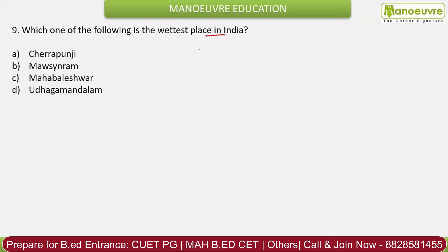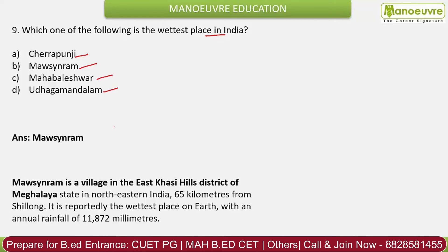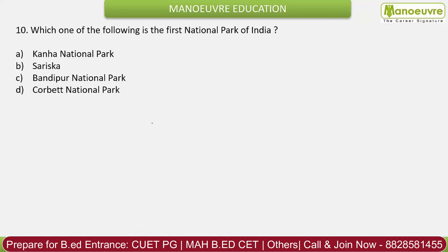Question 9: Which is the greatest rainfall place in India? Options: Cherrapunji, Mawsynram, Mahabaleshwar, Agumbe. The correct answer is Mawsynram. Mawsynram is a village in the East Khasi Hills district of Meghalaya, where the highest rainfall occurs. It is also the wettest place in the world.